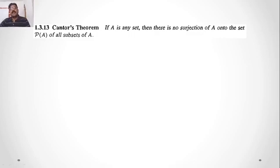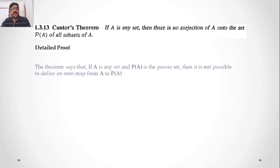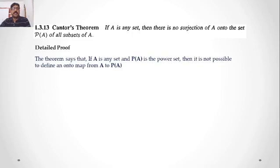Cantor's Theorem. If A is any set, then there is no surjection of A onto the set P(A) of all subsets of A. This theorem says that if A is any set and P(A) is its power set, then it is not possible to define an onto map from A to P(A).